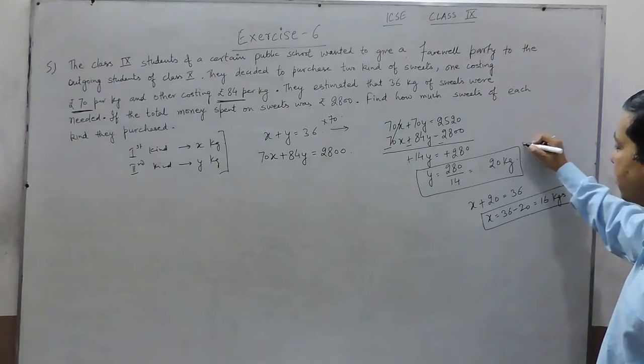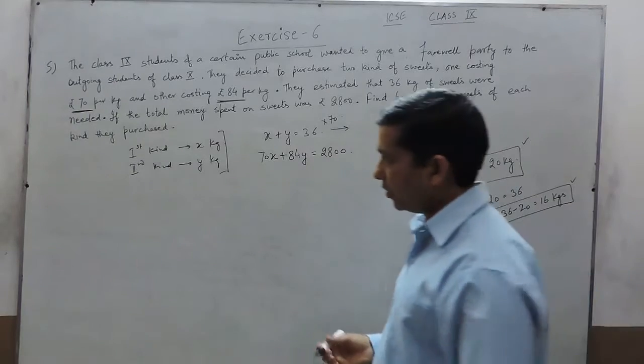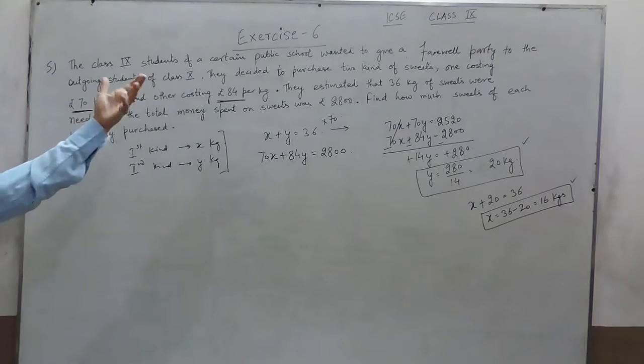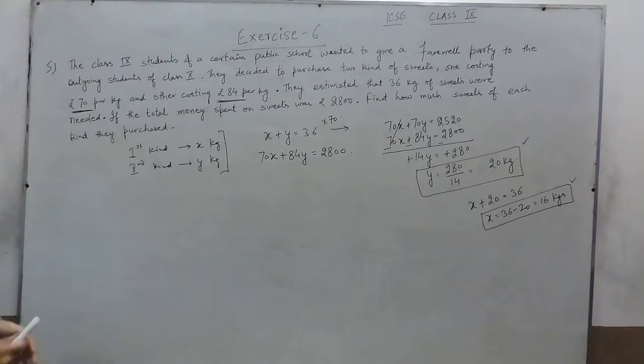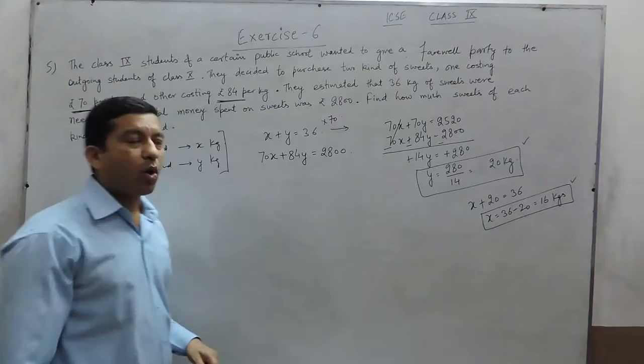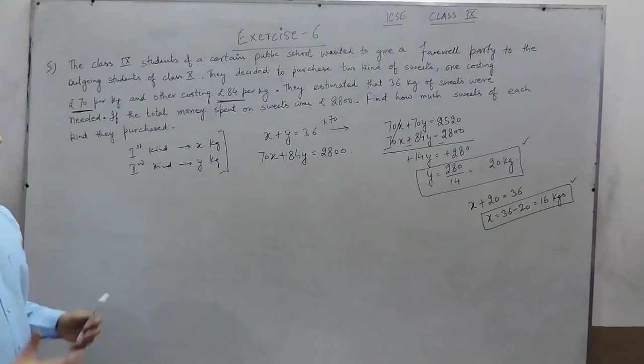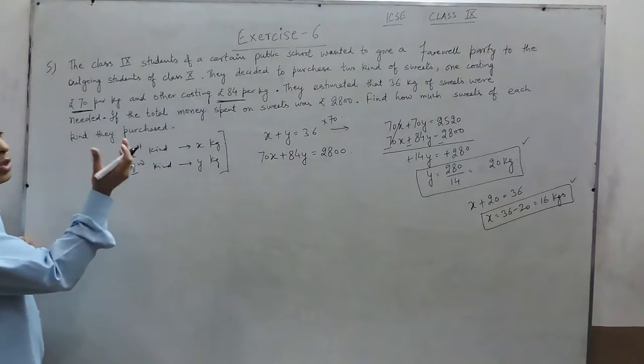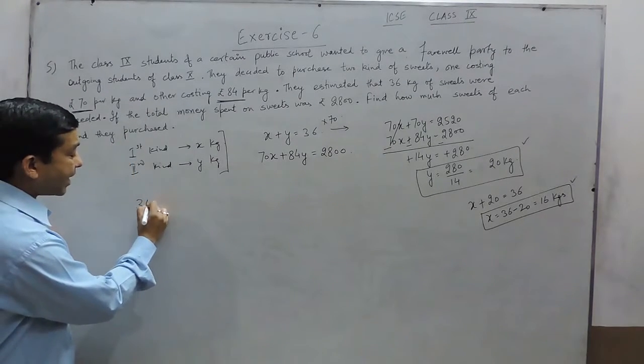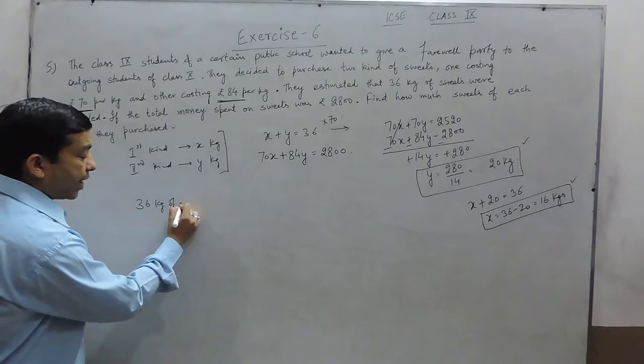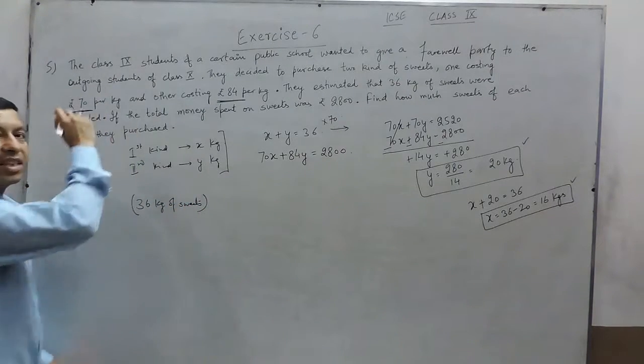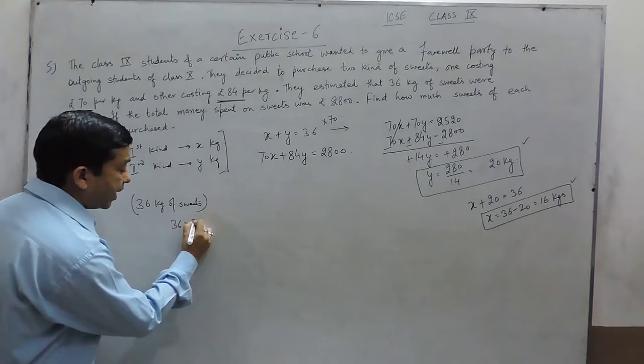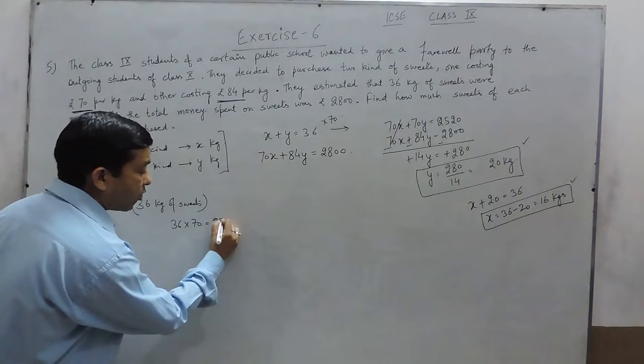So, this way we can solve it by simultaneous equation. But, I would like to tell you one more thing that it is very easy for us if we don't want to follow this procedure and want to solve this question orally, then what we can do? We say that suppose the total 36 kgs of sweets, we have purchased of the first kind. Suppose, now the total cost will be 36 x 70 and that is 2520.